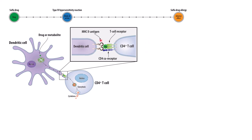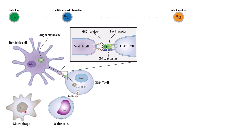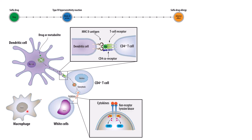Once this interaction occurs, it creates a signaling cascade inside the CD4-positive T cell that leads to the exocytosis of cytokines. These cytokines then bind white cells or macrophages at a non-receptor tyrosine kinase, which leads to the activation, proliferation, and migration of white cells.